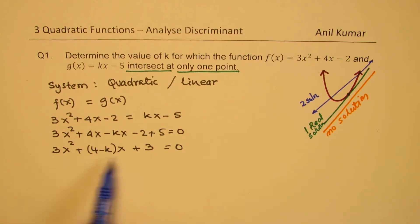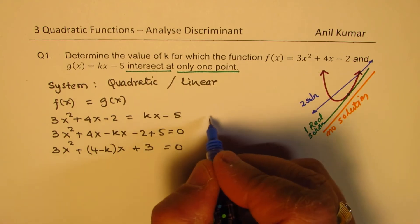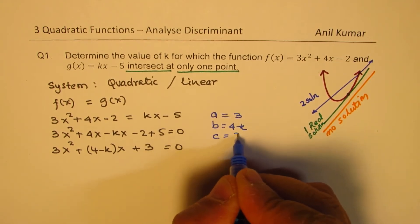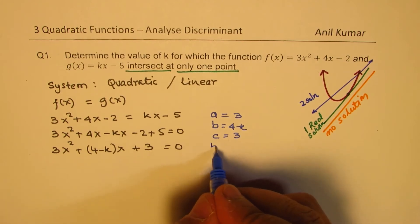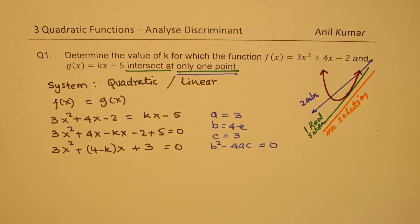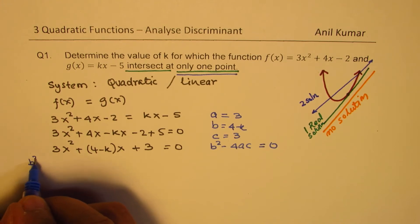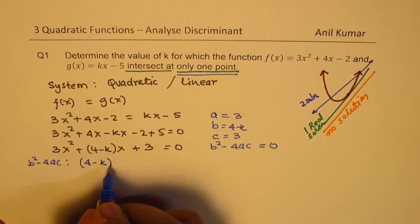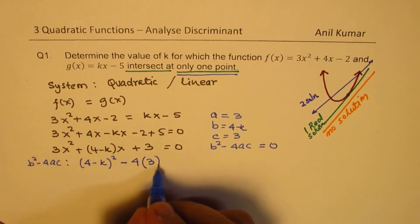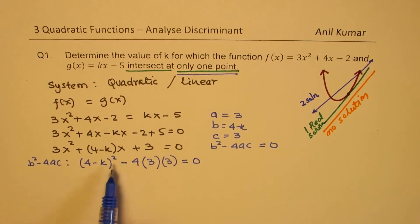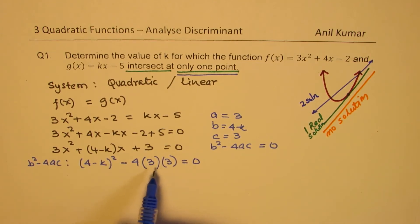In this standard form, a = 3, b = 4 − k, and c = 3. Since we want only one point of intersection, we set b² − 4ac = 0. So we write (4 − k)² − 4(3)(3) = 0, which gives us (4 − k)² − 36 = 0.